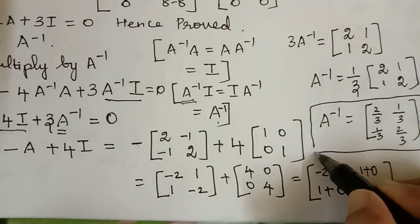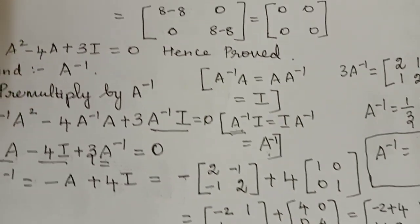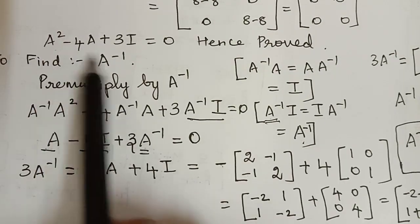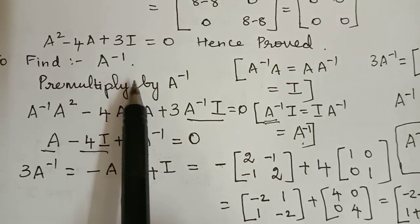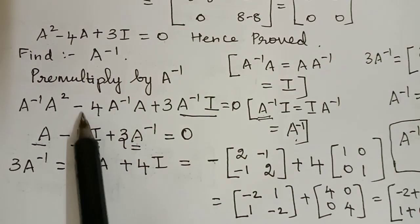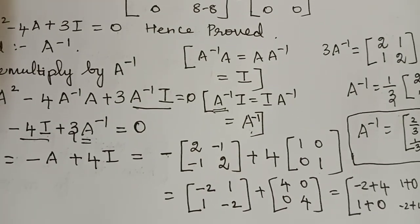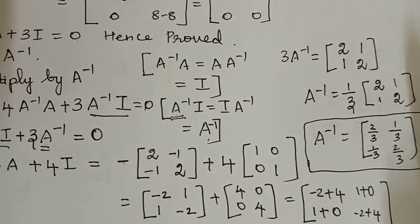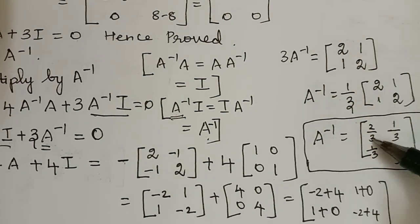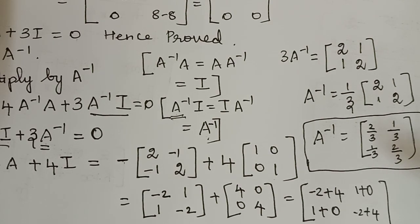Hope you have understood. First we proved that A squared minus 4A plus 3I equals 0. After proving, we pre-multiplied by A inverse and performed simplifications to find that A inverse equals [2/3, 1/3; 1/3, 2/3]. Hope you have understood this problem. Thank you.